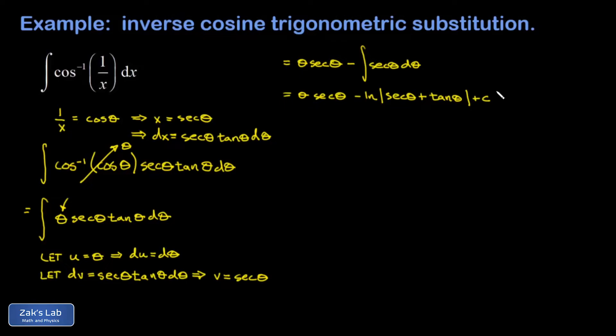but we still have to transform it back to x space. And if I look back at my original substitution, I see that theta is the inverse secant of x, we replace the secant of theta with x itself. And we proceed into the natural log part, the secant of theta again, is simply x. But when we hit the tangent of theta, we have a problem because we need now the tangent of the angle whose secant is x.